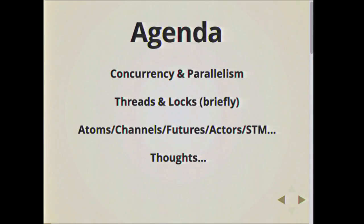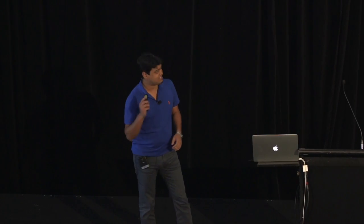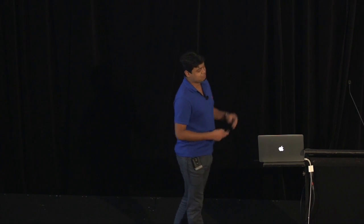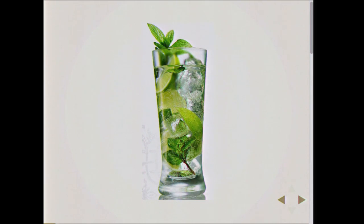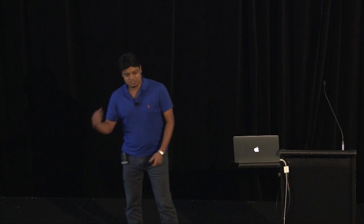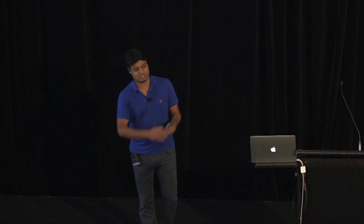First we'll explore what concurrency and parallelism are, look very briefly at threads before you guys start to vomit, and then explore some other topics with closing thoughts. This talk is supposed to be a lot of code mixed in like a nice cocktail — five spoonfuls of Clojure, some Ruby, a little bit of Elixir and Erlang, a little bit of Scala, and just so you guys don't fall over, a little bit of Java as well.